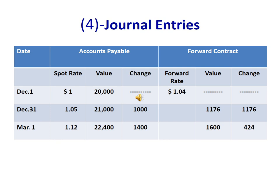While the forward contract achieves some gains: $1,176 on December 31st and $424 on March 1st.